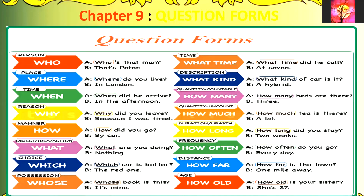When we need to show a sense of time, then we use 'what time.' For example: 'What time did he call?' — 'At seven.' When we need to give a description, then the question word asked should be 'what kind.' For example: 'What kind of car is it?' — 'A hybrid.' When the answer required is a countable quantity, then the question word used will be 'how many.' For example: 'How many beds are there?' — 'Three.' When the answer required is an uncountable quantity, then we use the question word 'how much.' For example: 'How much tea is there?' — 'A lot.'